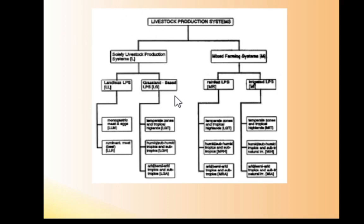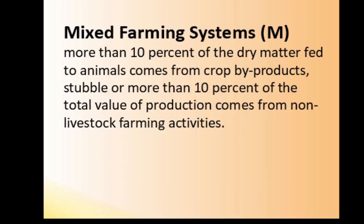Now, mixed farming systems are defined where more than 10 percent of the dry matter comes from crop byproducts or stubble, or more than 10 percent of the total value of production comes from non-livestock farming activities.